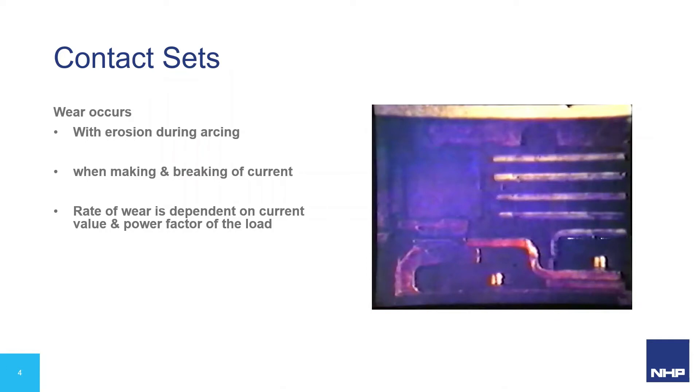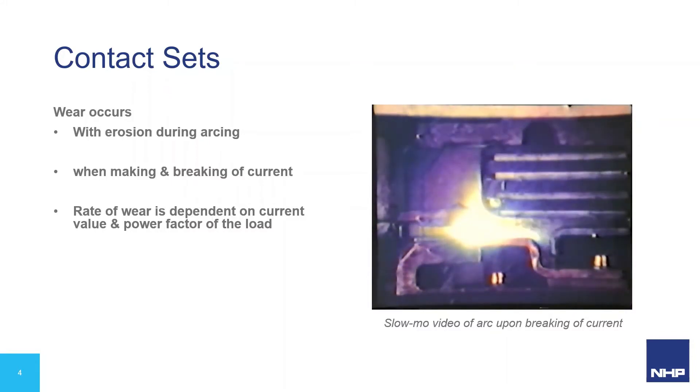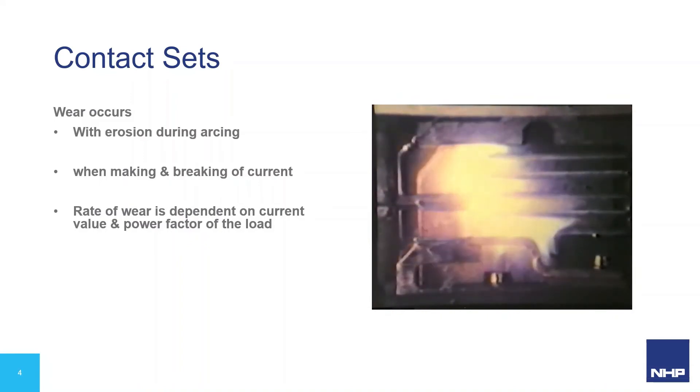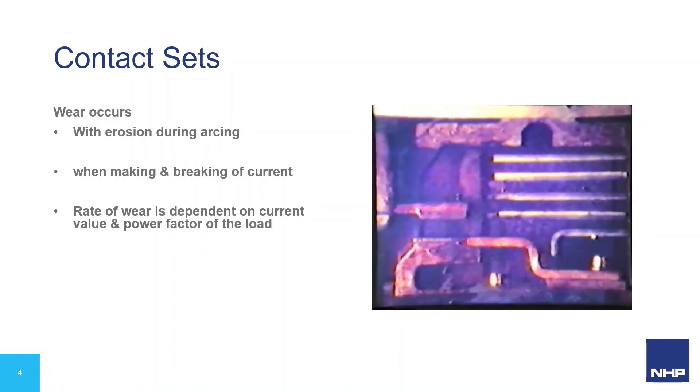The part of a contactor most often considered for maintenance is the main contacts. Wear of contacts occurs as small amounts of the contact material are vaporized as arcing occurs during closing and opening of contacts under load. The amount of arcing which occurs is dependent on the type of load being switched. AC1 duty, being resistive loads, has minimal arcing, whereas switching duty of AC4, which is opening of an inductive load at a higher than rated current, is more arduous.